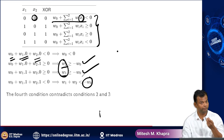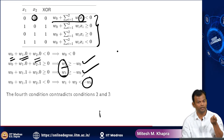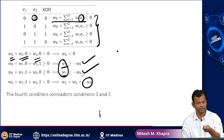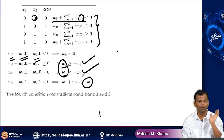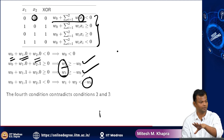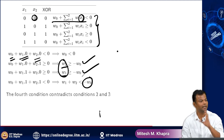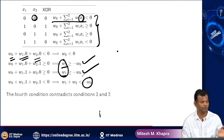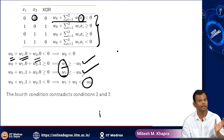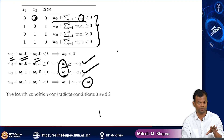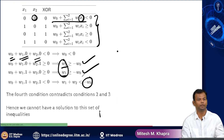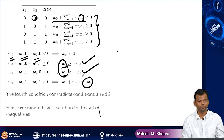That means I cannot find a set of W_i's such that all my positive points will be on one side and my negative points will be on the other side. That means this is not a linearly separable function.